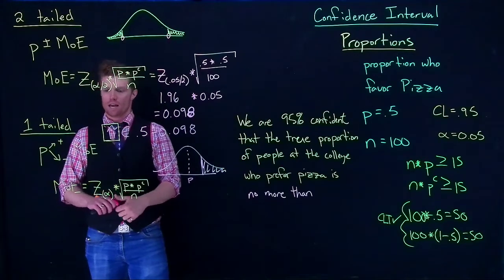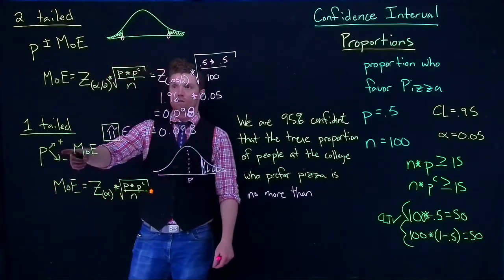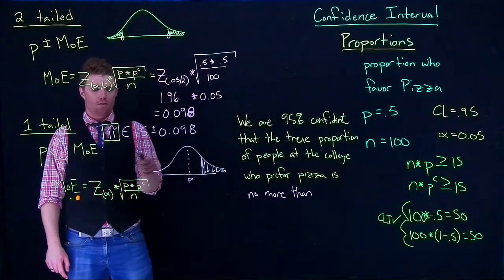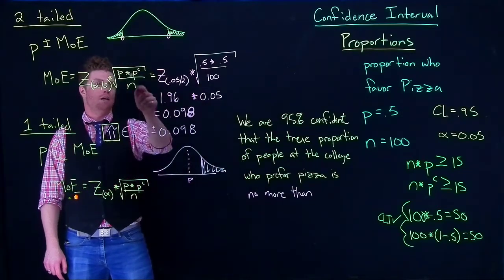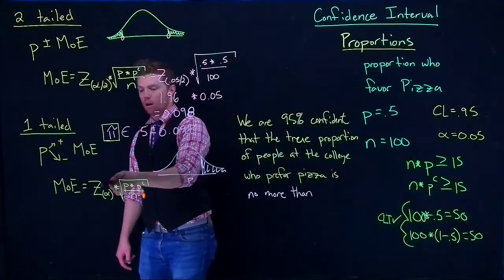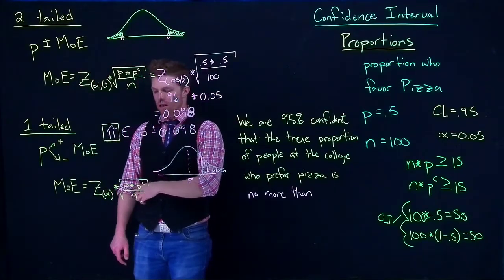Let's go ahead and calculate this. We already know what p is. It's the same p as we're dealing with. Our margin of error - we even know what our standard error is. We already calculated it, it's 0.05. So the only thing that we need to do is figure out our z value, this z of alpha.